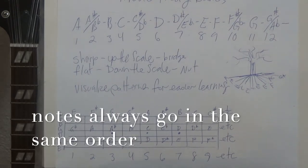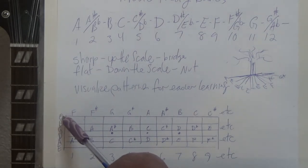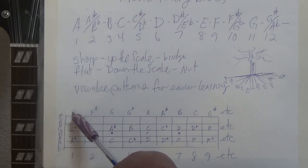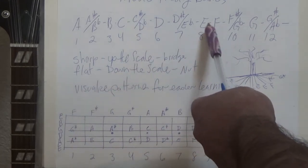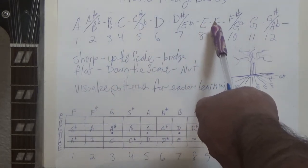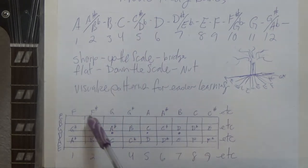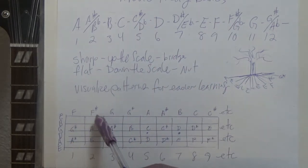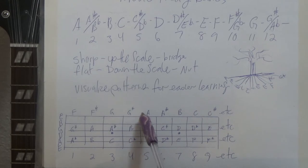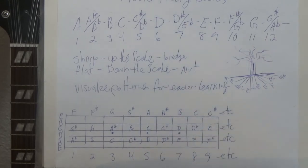Now let's say we start with the E string. If we play that string open, that's an E note. Then our first fret is going to be an F, because that's what it tells us up here — the next note in the musical alphabet is F. And the next note is an F sharp, then a G, G sharp, A, A sharp, B, C, C sharp, and so forth — just like up here.